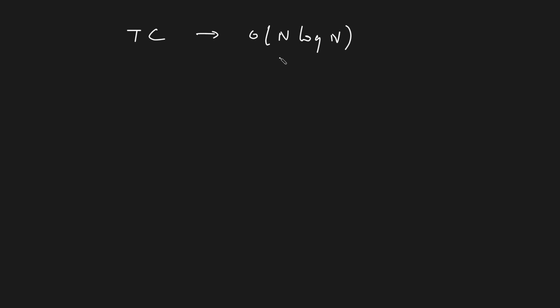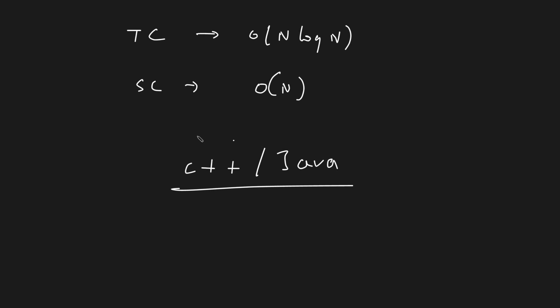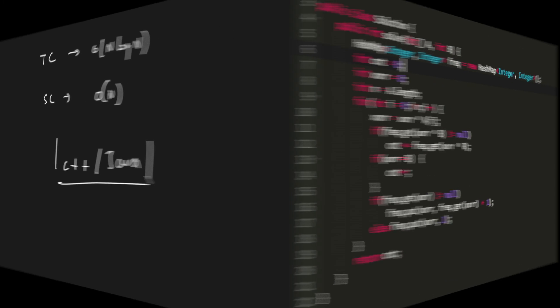The time complexity is O(n log n) using a map. Some might argue O(n) is achievable using unordered_map with O(1) average search, but in the worst case unordered_map takes O(n) for search, so it's safer to use map. Space complexity is O(n) because you're storing prefix XOR values in the hashmap.